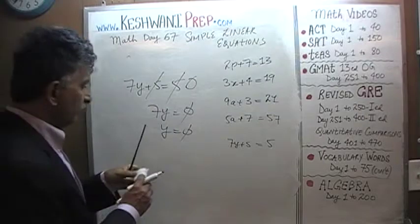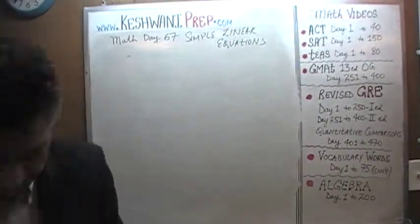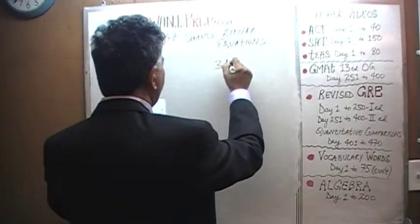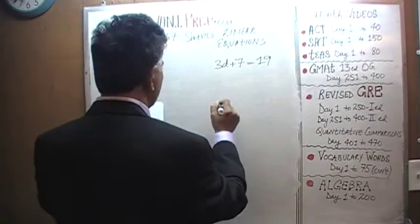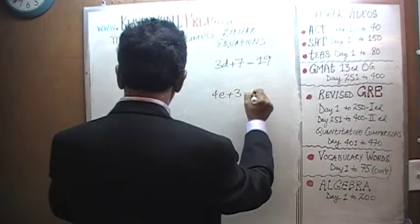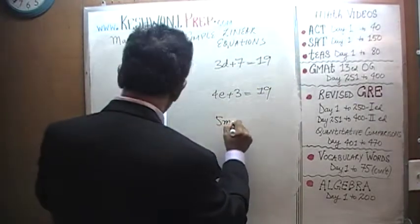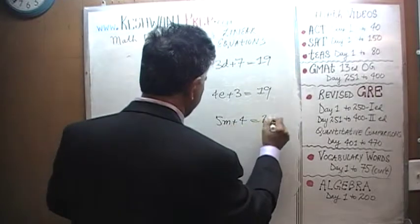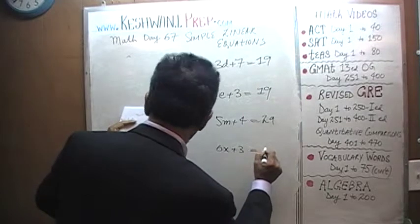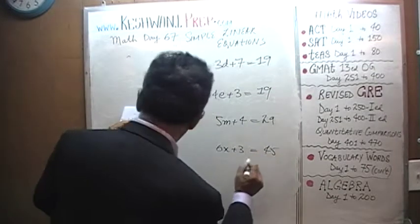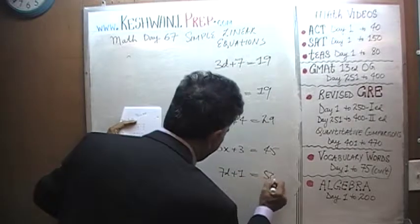Let's keep on going — 5 more. 3d plus 7 equals 19. 4e plus 3 equals 19 again. 5m plus 4 equals 29. 6x plus 3 equals 45. And finally, 7d plus 1 equals 50. Let's do them one by one.